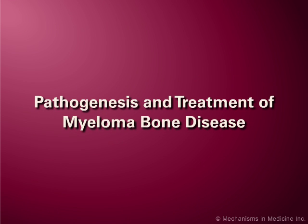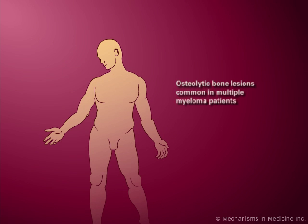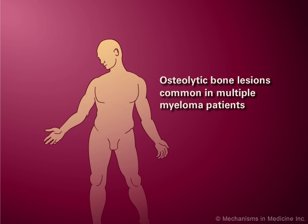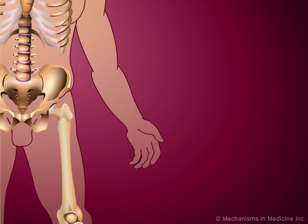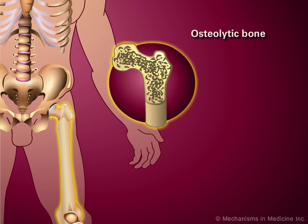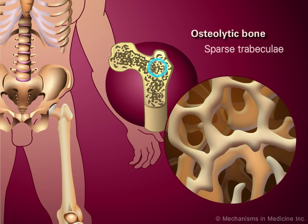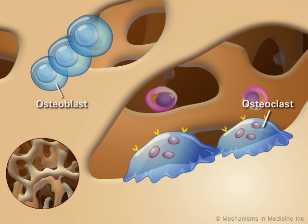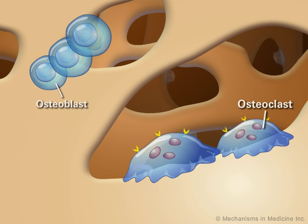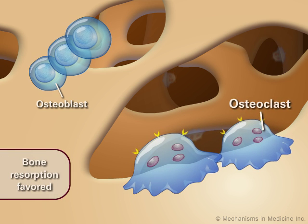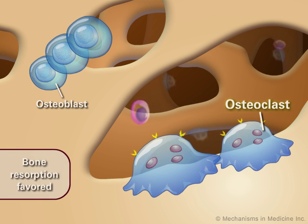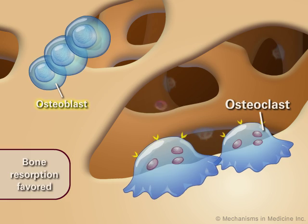Pathogenesis and Treatment of Myeloma Bone Disease. Osteolytic bone lesions are commonly observed in patients with active multiple myeloma. For example, osteolytic bone is characterized by sparse trabeculi and is often associated with brittle bones. These bone lesions result from an imbalance which favors bone resorption and osteoclast activity over that of the osteoblasts.